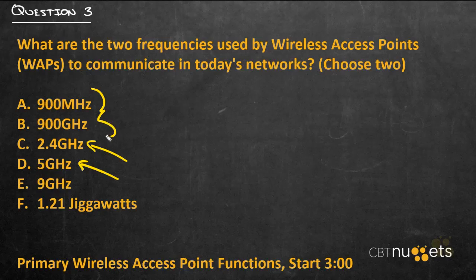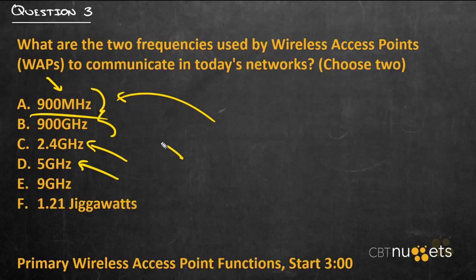Those other options are also known as unlicensed frequencies — you see a lot of old cordless phones that use those. The beauty of the lower frequency, specifically 900 MHz, is it actually transmits farther but has less bandwidth than the higher frequencies. Megahertz and gigahertz work the same way as megabyte and gigabyte — a gigahertz is a thousand megahertz.